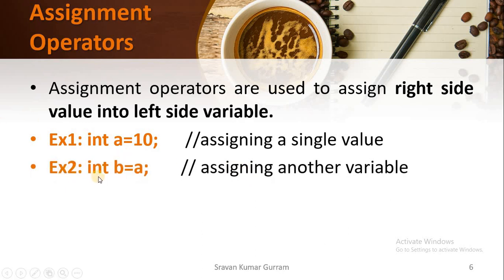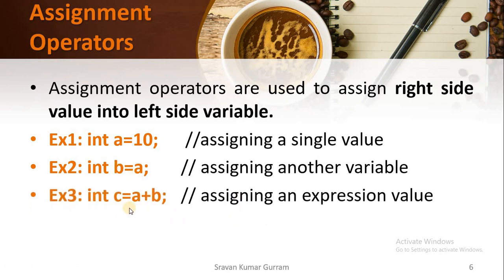See this example: int b = a. In this case the value of a is assigned to the variable b. We can assign one expression to a variable also. If you write int c = a + b, first the right-hand side of the expression will be evaluated, and that value will be assigned to the variable c.